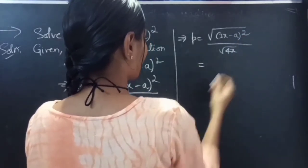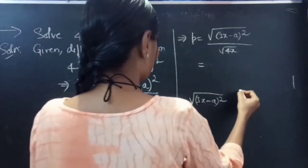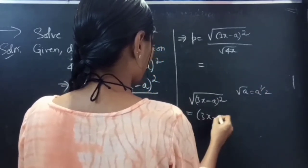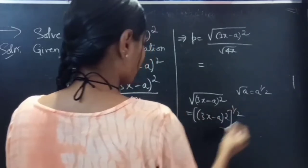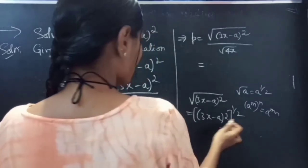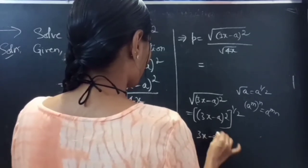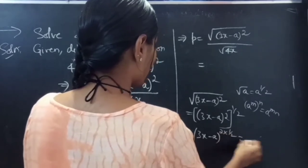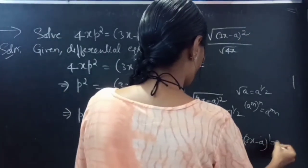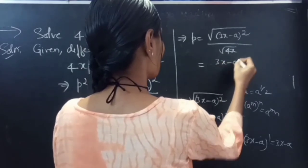In the numerator we have square root of (3x − a)². We know that square root of a equals a to the power 1/2, and that (a^m)^n equals a^(m·n). So for a = (3x − a) with m = 2 and n = 1/2, we get (3x − a)^(2 × 1/2) = (3x − a)^1 = 3x − a.